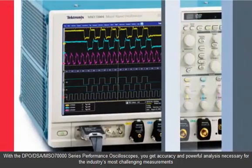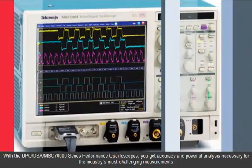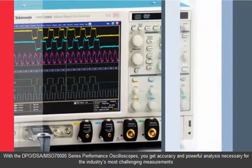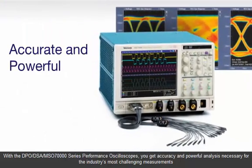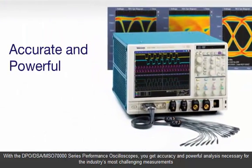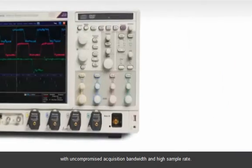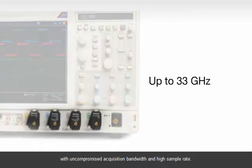With the DPO-DSA MSO 70,000 Series Performance Oscilloscopes, you get accuracy and powerful analysis necessary for the industry's most challenging measurements, with uncompromised acquisition bandwidth and high sample rate.